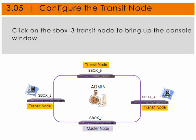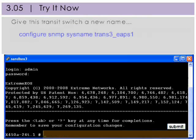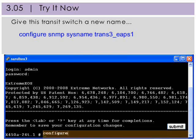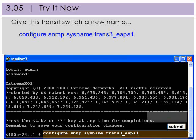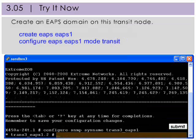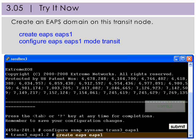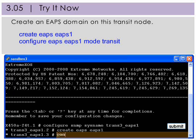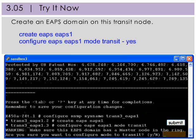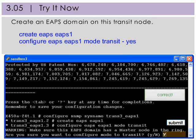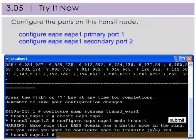I've got a good start on the master node, so now it's your turn. Click on the SBOX3 transit node to bring up the console window so you can begin configuring that node. Give this transit switch a new name. Create an EAPS domain called EAPS1 and configure this node as a transit switch. When you see the warning about the master node, respond with yes. Configure the primary and secondary ports for this transit node.